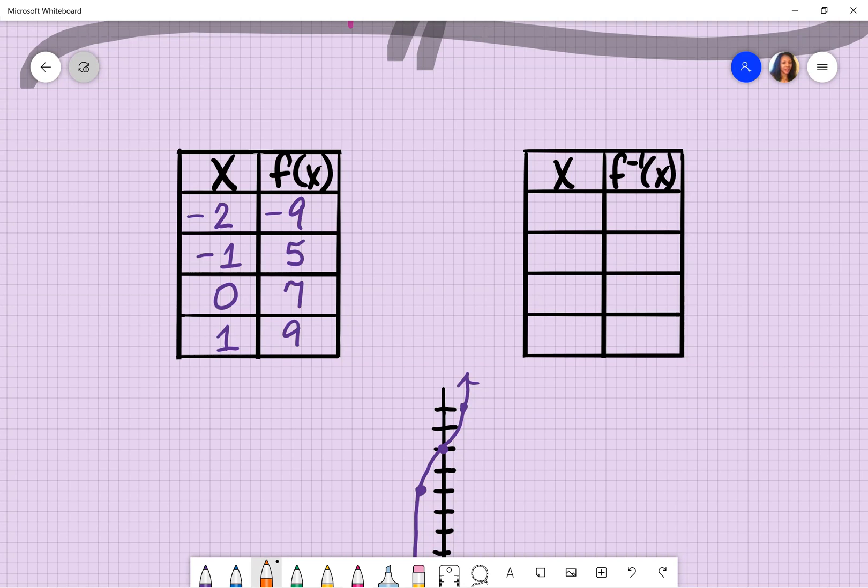If I'm trying to find the inverse point, what I would do is I would remember from the finding inverse video where I talked about swapping your x's and your y's first. My first table has a y over here, so I'm going to swap it with my x values of my inverse table. So what's shown in my f of x, which is really y column, that's what's going to go in my x column of my inverse table. So I have negative 9, positive 5, 7, and 9.